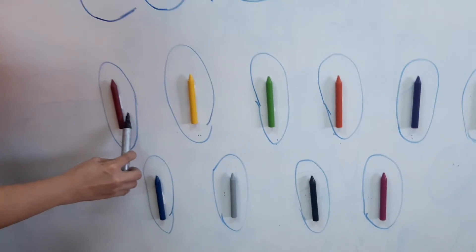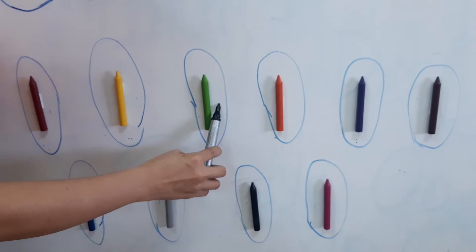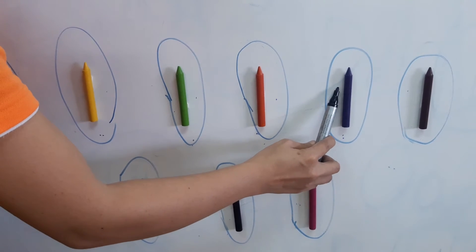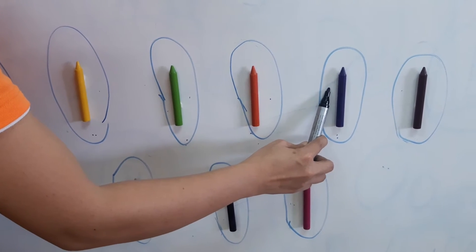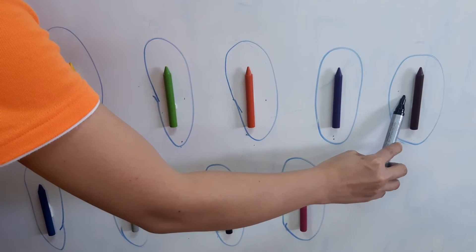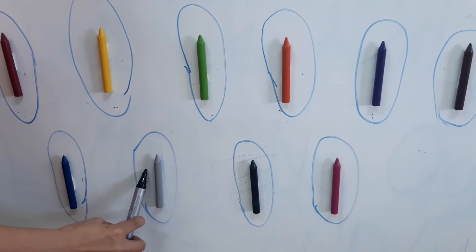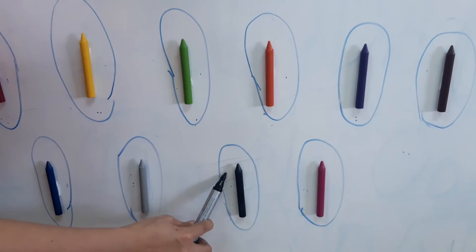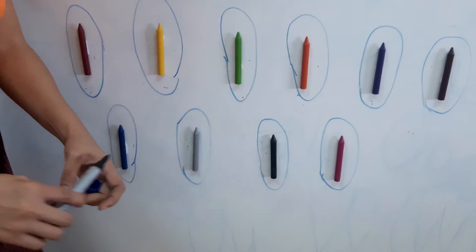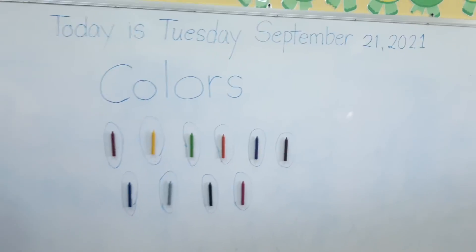Say it with me. Red. Yellow. Green. Orange. Purple. Violet. Brown. Blue. Gray. Black. And pink. And pink. Very good. Do you understand, children? Okay.